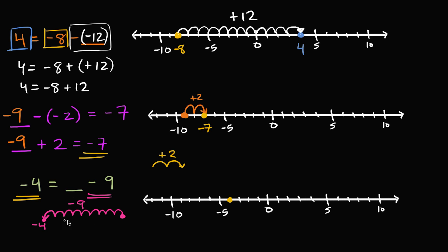That number is going to be nine to the right of negative four. Counting nine to the right of negative four — one, two, three, four, five, six, seven, eight, nine — it looks like positive five. Let's verify: if we start at positive five and subtract nine, moving nine to the left — one through nine — we end up at negative four. So negative four is equal to five minus nine.